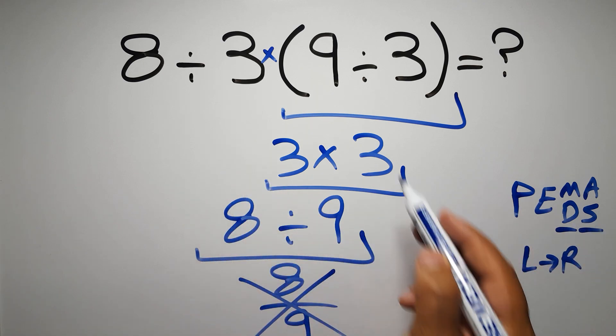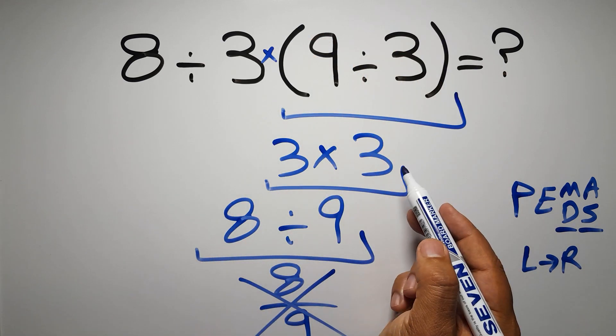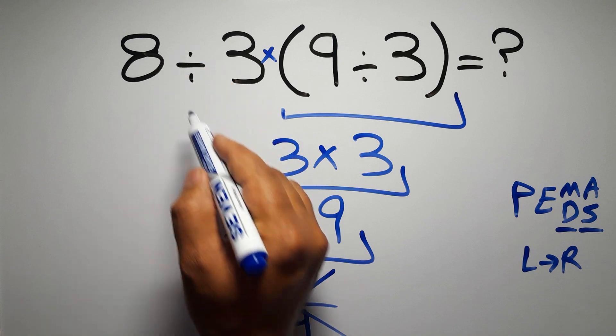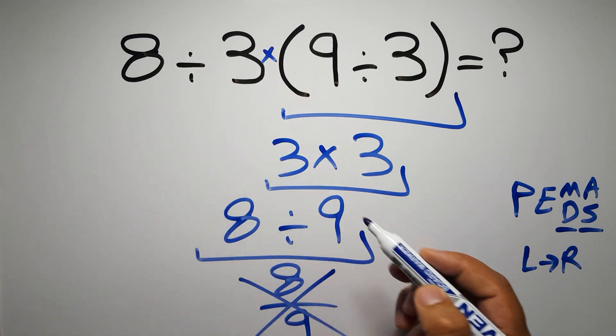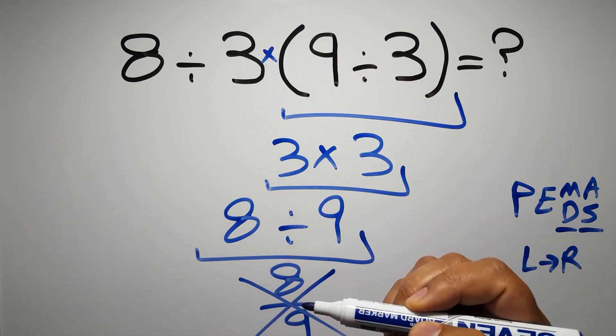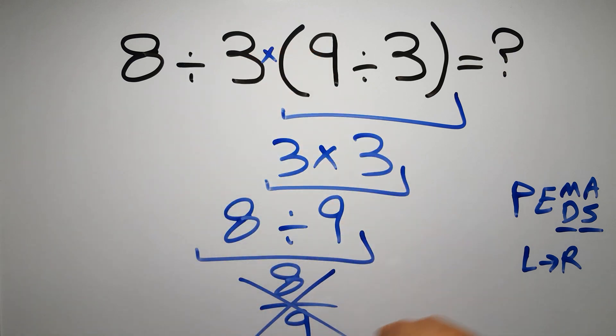So according to the PEMDAS, first we have to do this parentheses, then this division, and finally this multiplication. If we do this multiplication before this division, it is wrong.